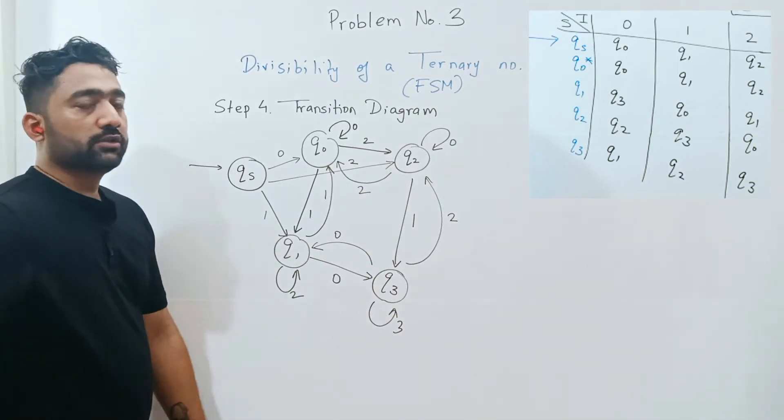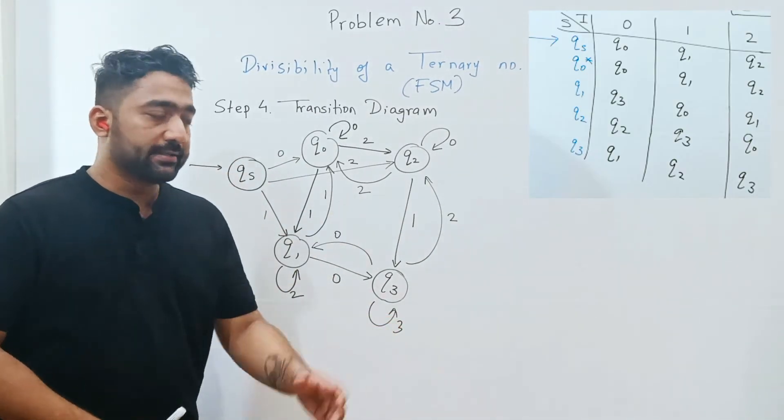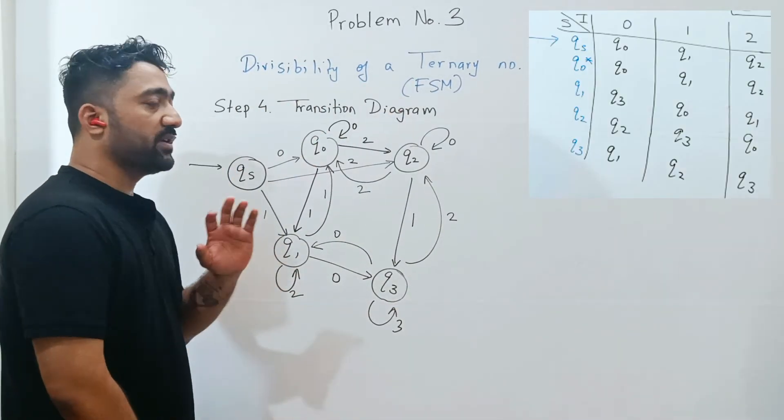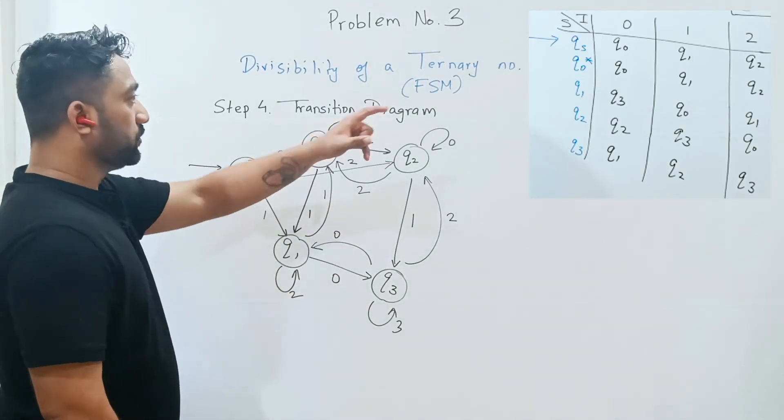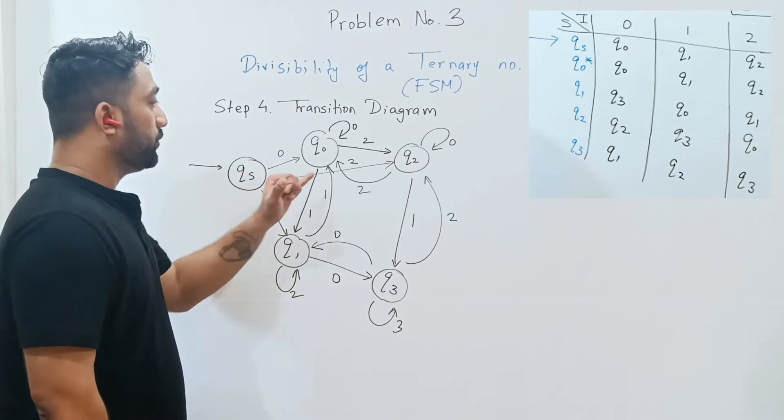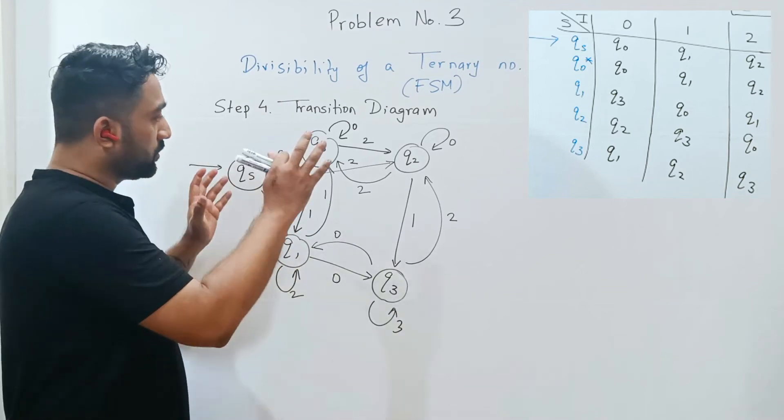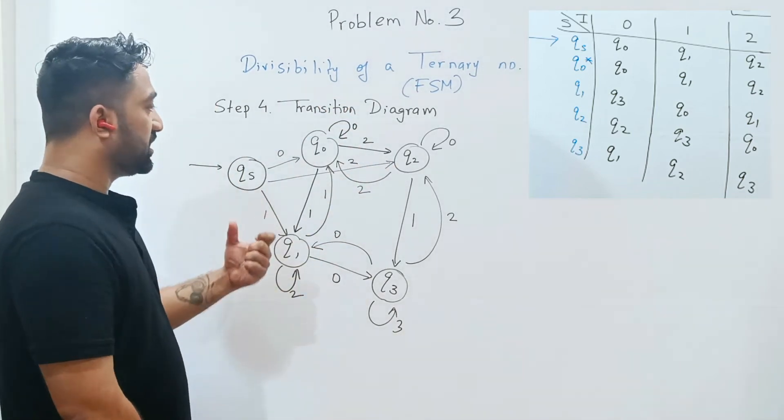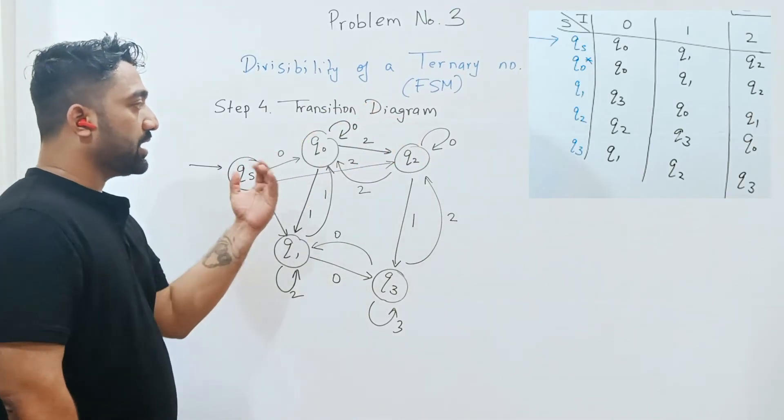In short, we are having 15 transitions from these 5 states. You have the table in front of us, it's very simple. Simply compare it with that table and you'll get the answer. qs on input 0 goes to q0, qs on input 1 goes to q1, qs on input 2 goes to q2, and so on. If you have a little space, draw this diagram in a better sequenced fashion so you don't get confused or overlapping. This diagram is simple.